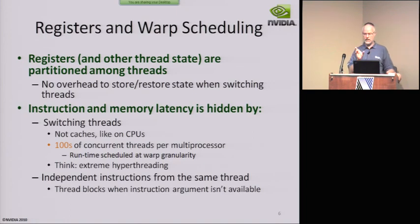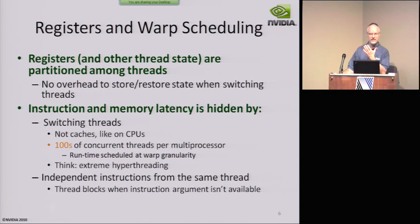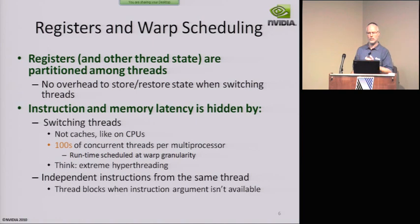We build a multiprocessor with the ability to switch between many threads that might be ready to run, so we can do something useful while waiting the hundreds of cycles it may take for data to get from DRAM to shared memory or registers. This is like hyper-threading but taken to the extreme — a huge number of threads running at any given time, many concurrently in various stages of execution. Scheduling is done at runtime at warp granularity.